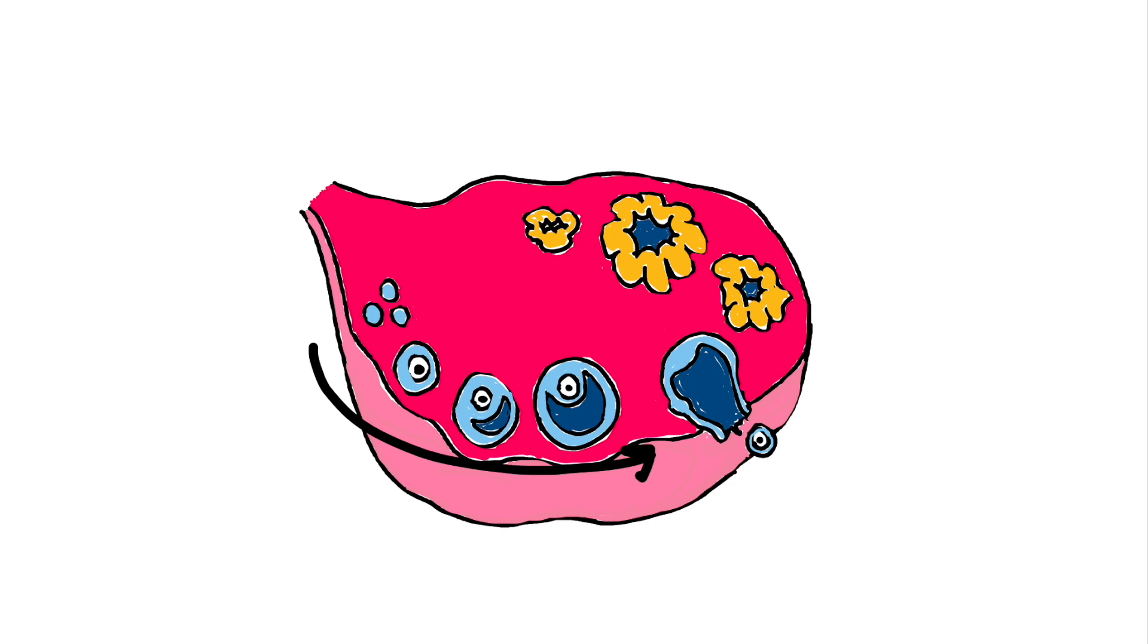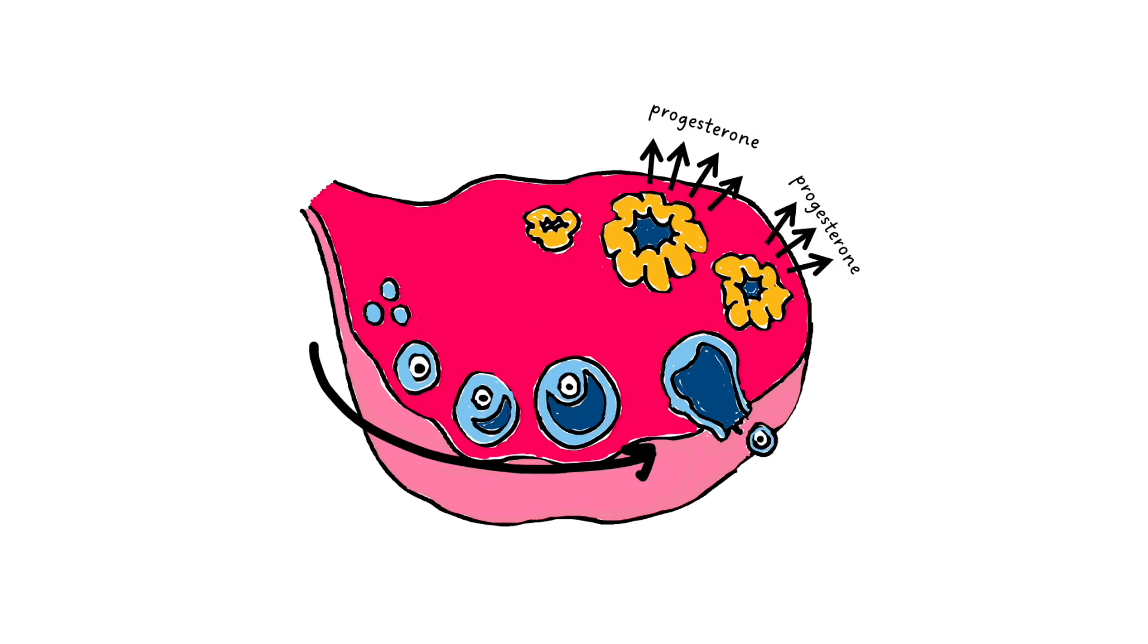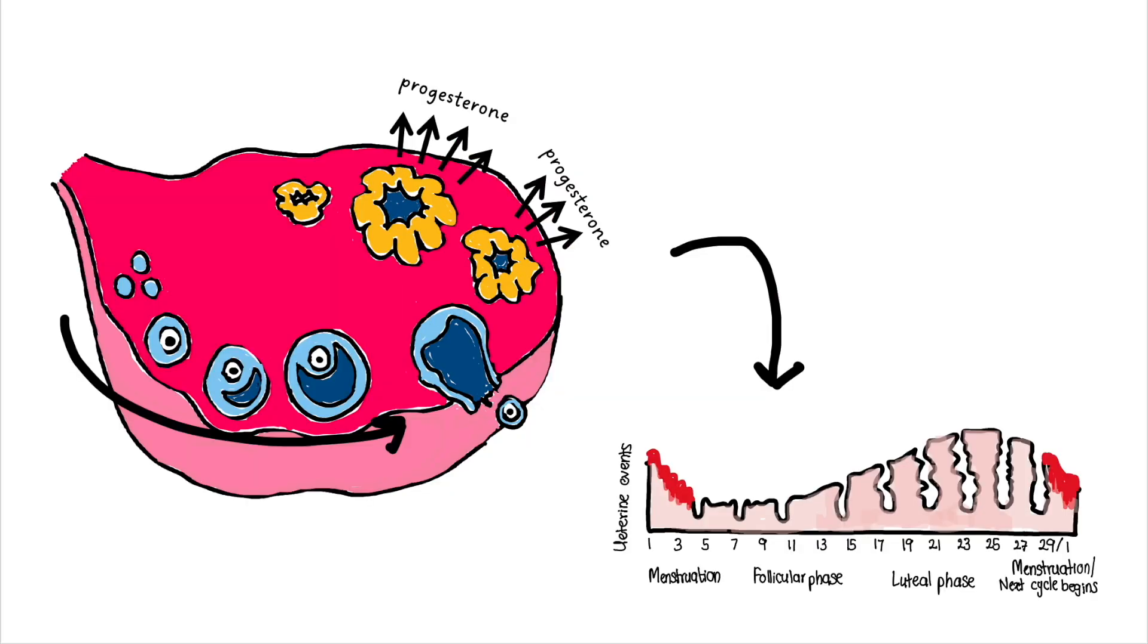Following ovulation, the ruptured ovarian follicle transforms into a structure called the corpus luteum. The corpus luteum secretes progesterone and some estrogen. These hormones play essential roles in preparing the endometrium, that is the lining of the uterus, for the potential implantation of a fertilized egg. Progesterone helps to maintain the thickened endometrial lining, making it suitable for implantation. It also supports the secretion of uterine fluids that nourish the embryo. The presence of the corpus luteum and its hormone secretion maintains the hormonal environment necessary to sustain a potential pregnancy.